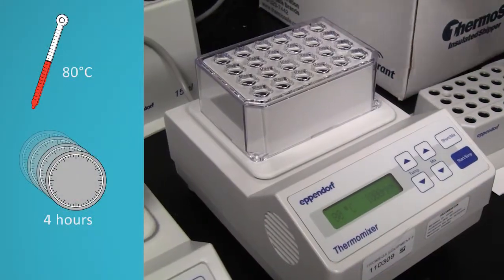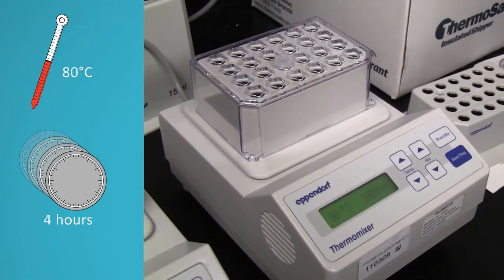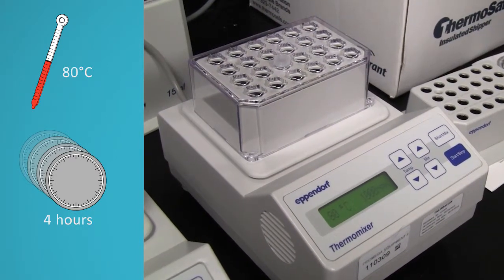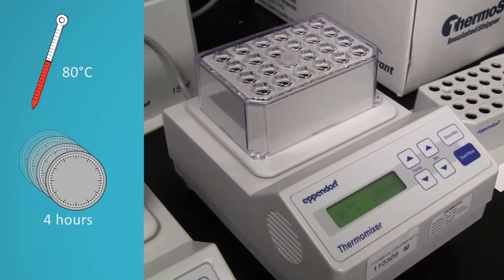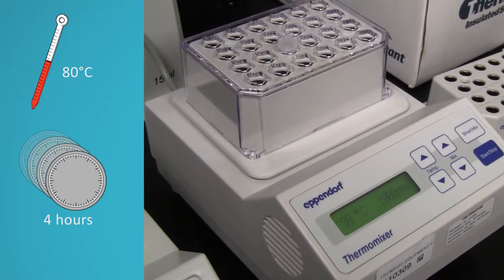Transfer the sample tubes to an 80 degree heat block and incubate for 4 hours. This allows the DNA to decross-link. A 4-hour incubation will give maximum yield of DNA.